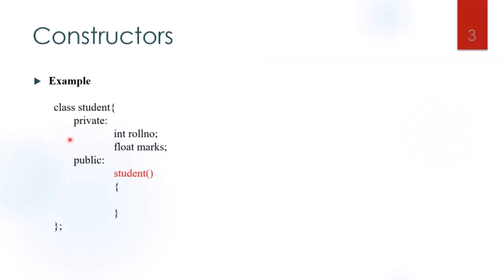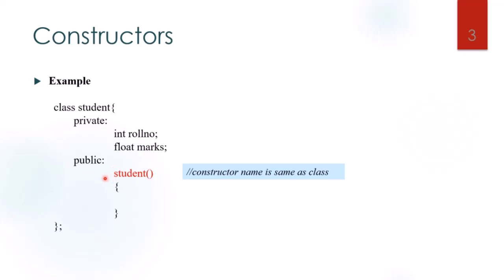Let us see an example of the constructor. Here, we have created the class 'student', within which two data members are declared as private. Then in the public section, we are going to define the constructor. We can see that the constructor has the same name as the class, and as already seen, the constructor does not have a return type — not even void.